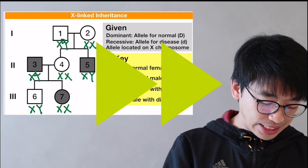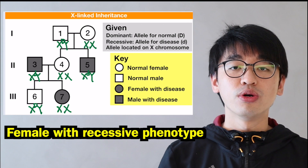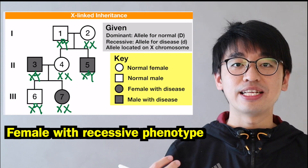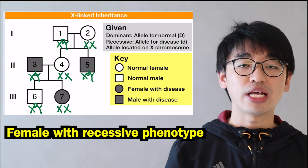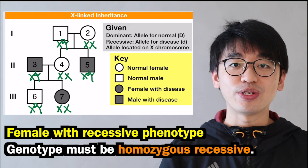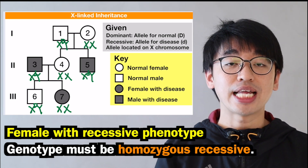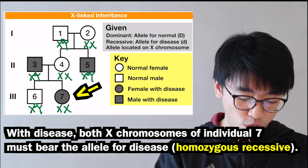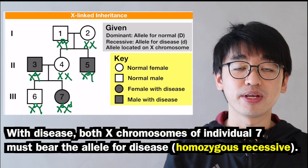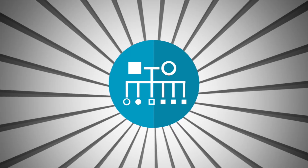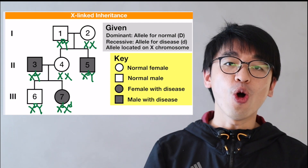For females showing the recessive phenotype, it is clear that they must be homozygous recessive, since the recessive allele can only be expressed in the homozygous state. Therefore, individual 7 must have both X chromosomes bearing the allele for disease. The remaining question is the genotype of individual 2 and individual 4, which is most commonly asked in exams.